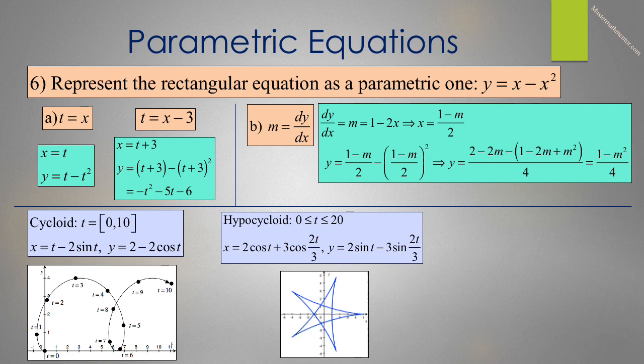The hypocycloid has parametric equations x equals 2 cos t plus 3 cos of 2t over 3, and y equals 2 sin t minus 3 sin of 2t over 3, for t runs from 0 to 20. The hypocycloid represents a point on a circle of radius 3, which is rolling around the inside of a circle of radius 5.